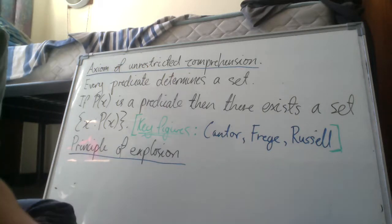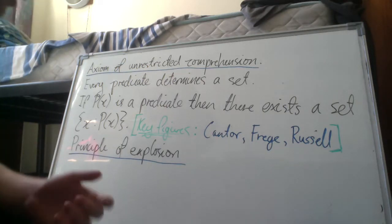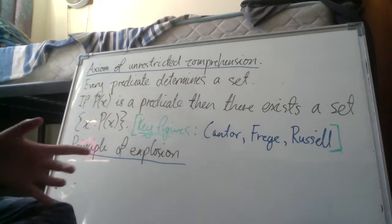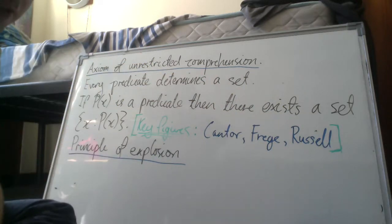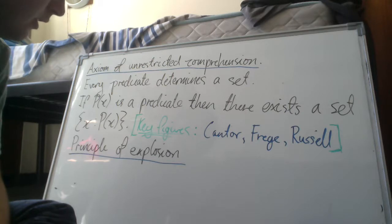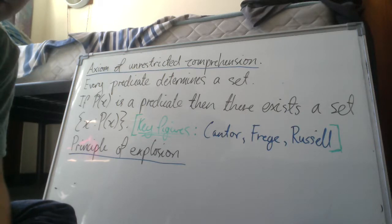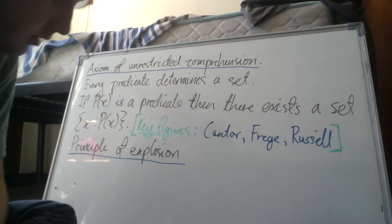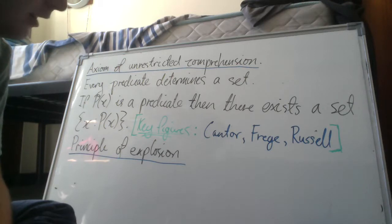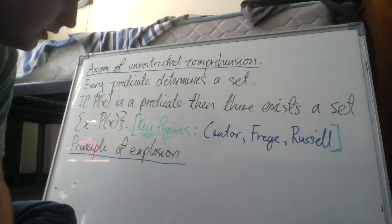Essentially what the axiom of unrestricted comprehension states is that every predicate, essentially a condition, determines a set. This seems quite intuitive in the sense that we could say x is green, so therefore there exists a set of all green things. But it turns out in terms of mathematics this axiom is incoherent, so it results in a paradox.